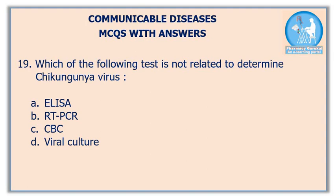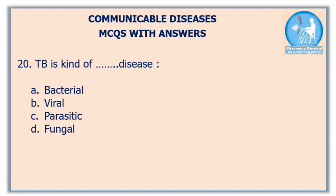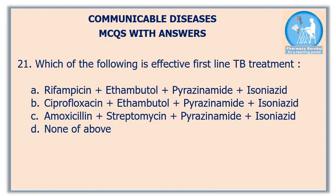Nineteenth question: which of the following tests is not related to determining the Chikungunya virus? The correct answer is option C: CBC test. Although CBC test is advised to determine blood parameters, it cannot detect the virus. Twentieth question: TB is a kind of disease — the correct answer is option A: tuberculosis is a kind of bacterial disease.